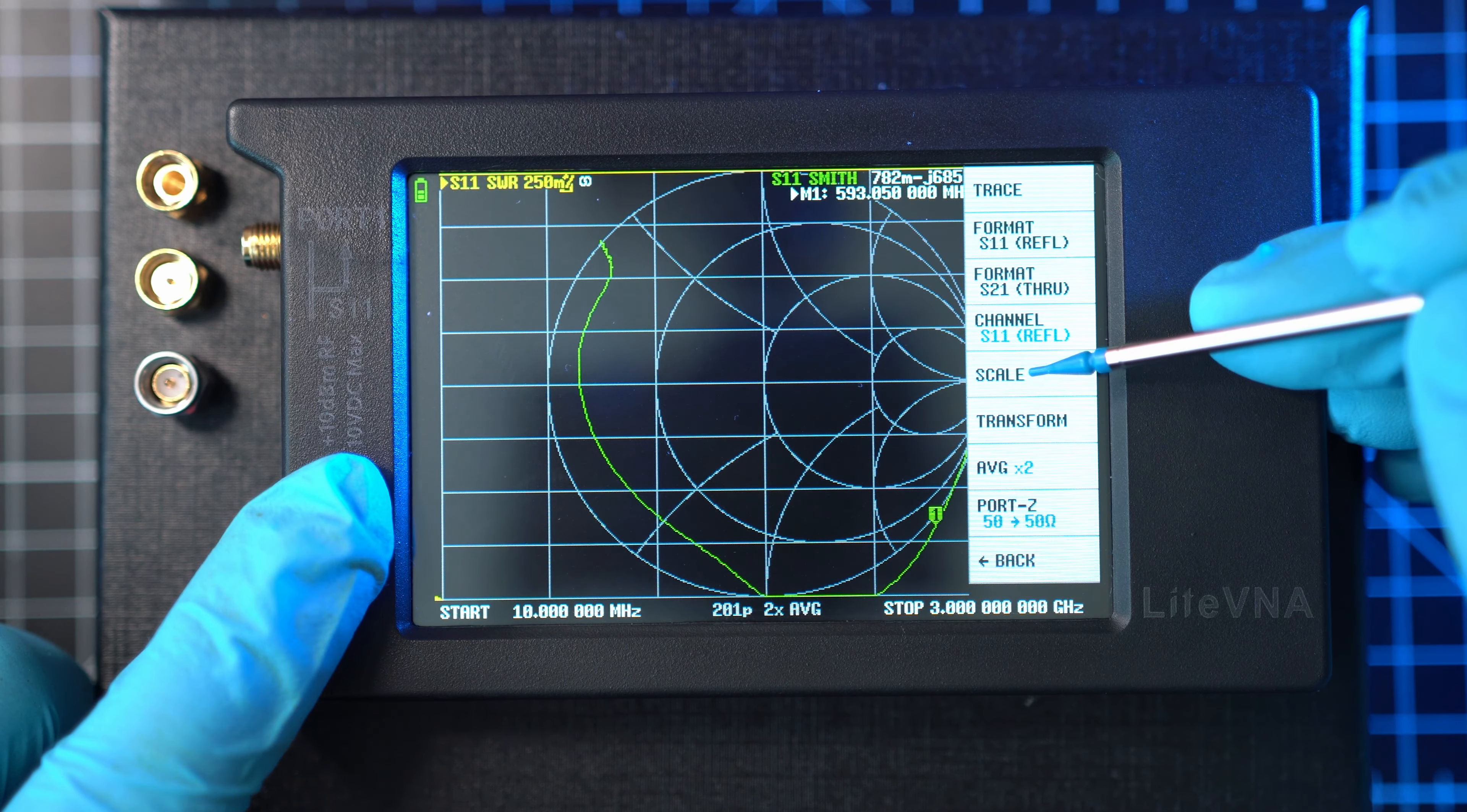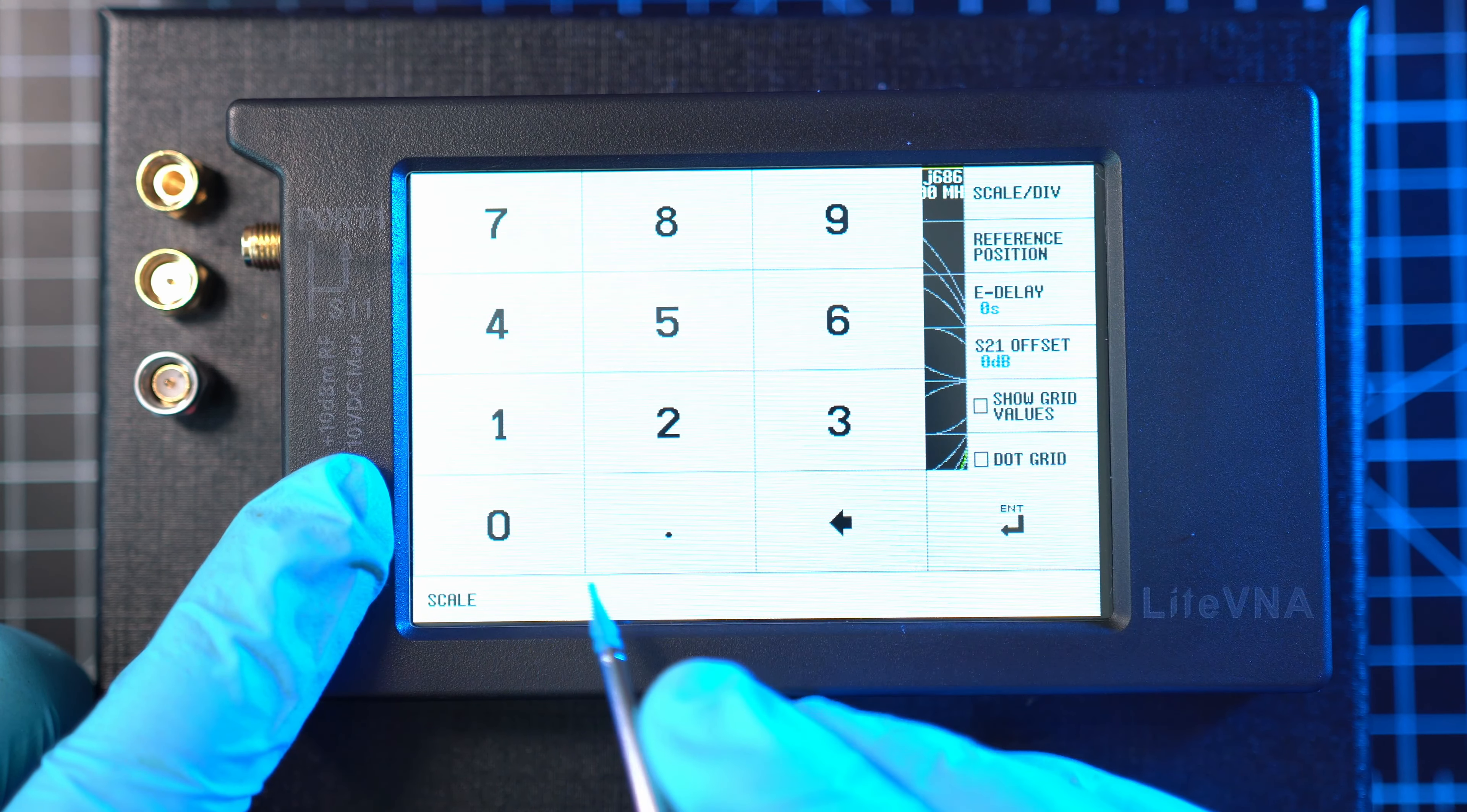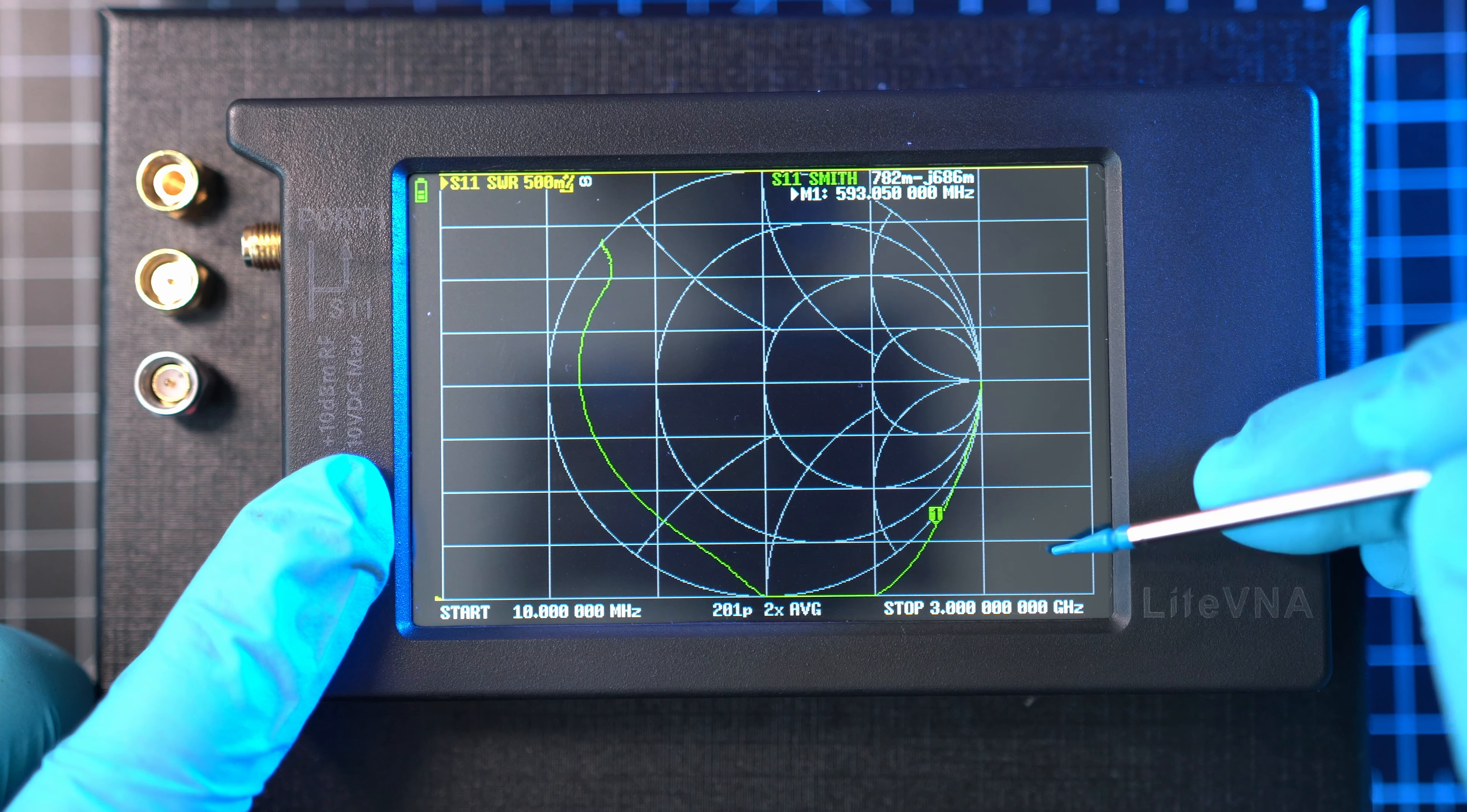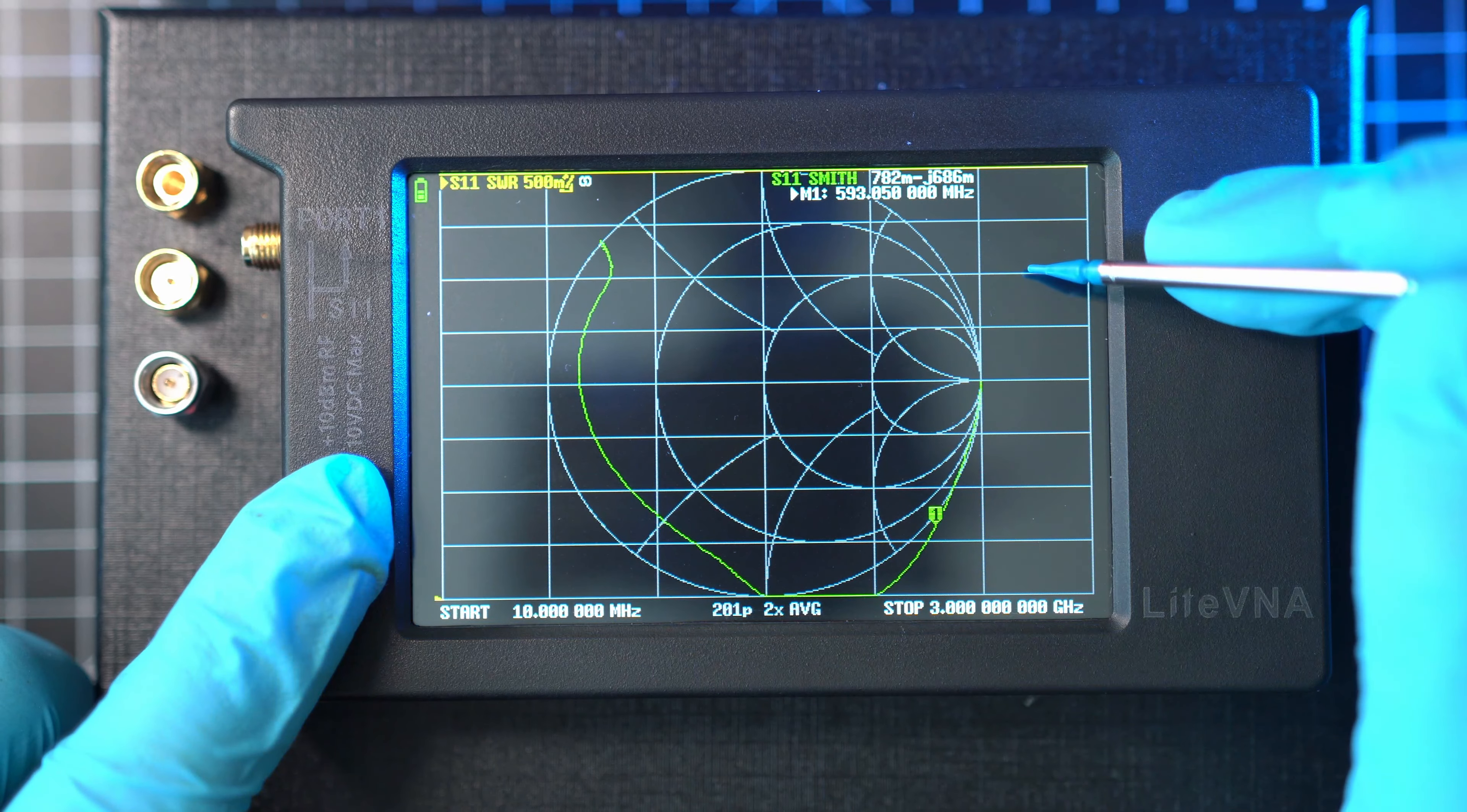Go back. Hit scale and scale/DIV. Here I like to have 0.5 increments of SWR value, so each rectangle is 0.5 of the SWR. Ideally, you don't want to see SWR higher than 3 on good antenna.